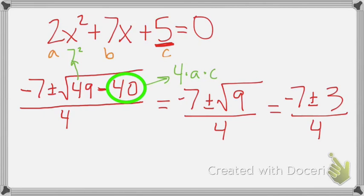Alright, so now that we have this, what this is actually saying, remember, the plus or minus means that there's actually two things going on here. We're doing the first thing, we're doing negative 7 plus 3, and then dividing it by 4. The second thing is that we're doing negative 7 minus 3, and then we're dividing that by 4.